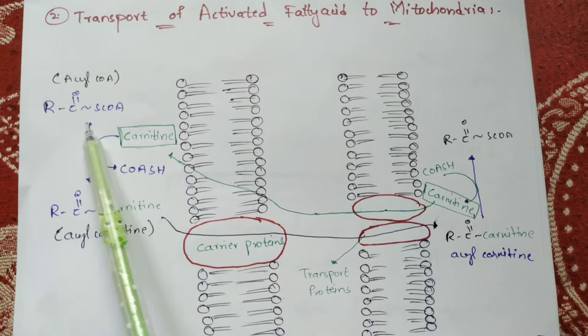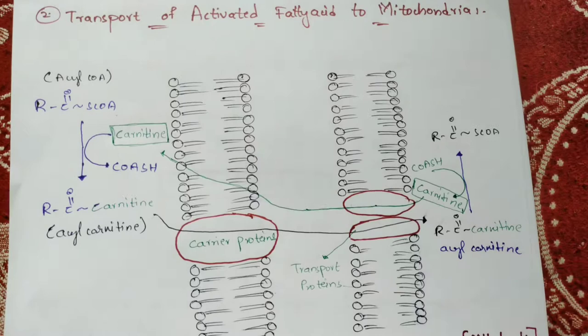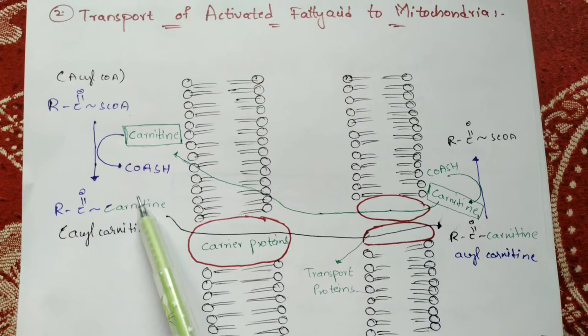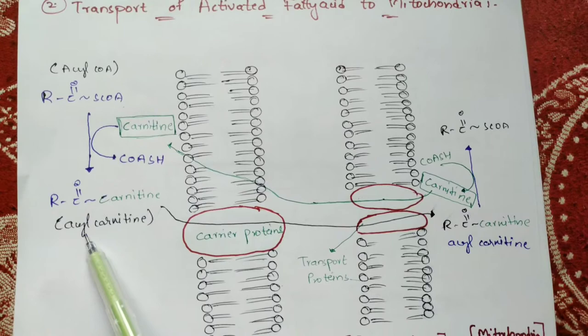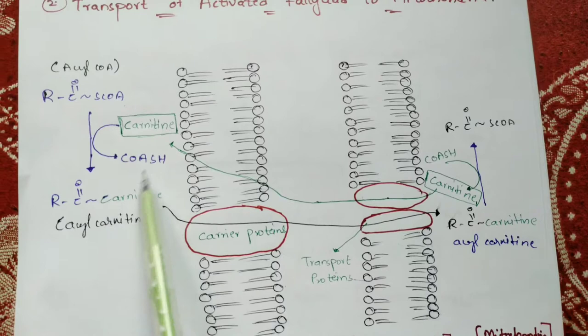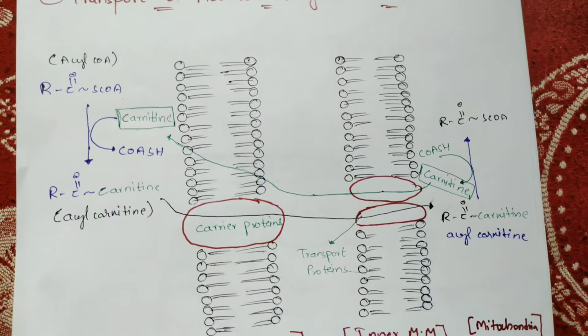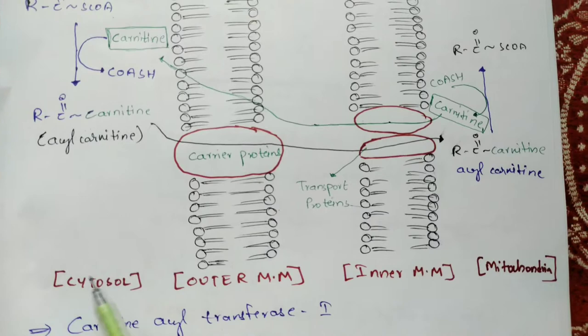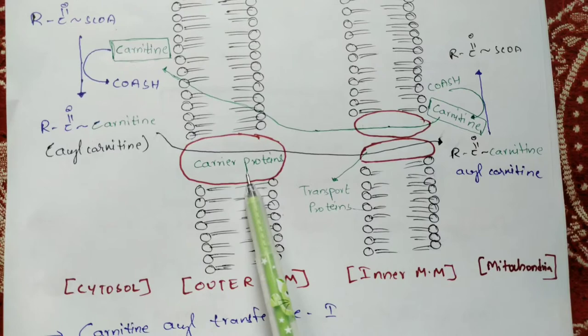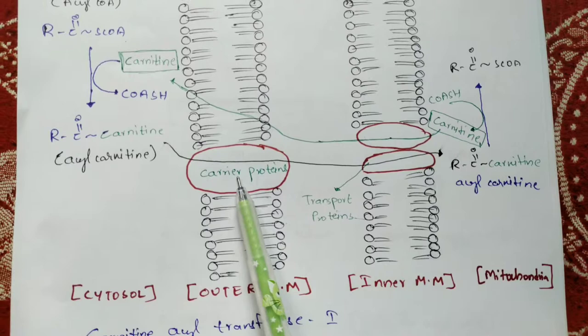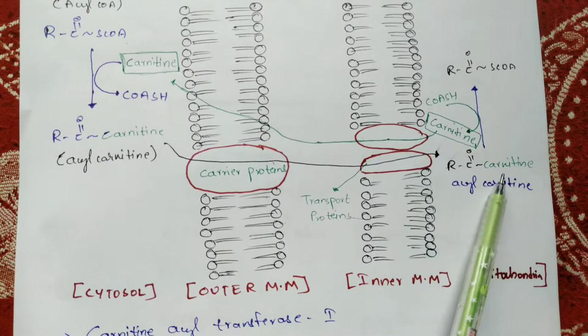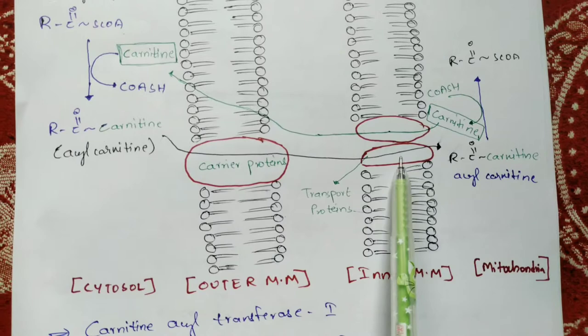When carnitine is used, the coenzyme A gets liberated out, and carnitine attaches in its place. The product formed is called fatty acyl carnitine. This fatty acyl carnitine, formed in the cytosol region, enters through the outer mitochondrial membrane with the help of carrier proteins, which transport it into the mitochondrial membranes.